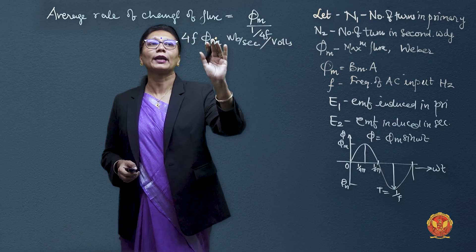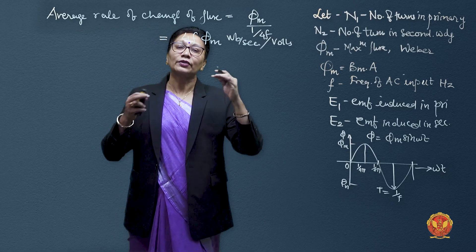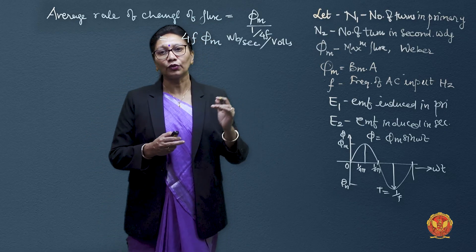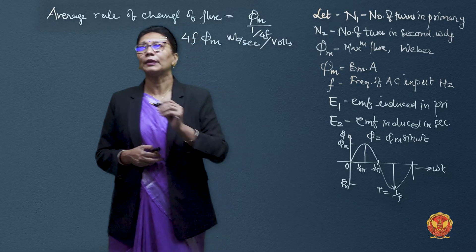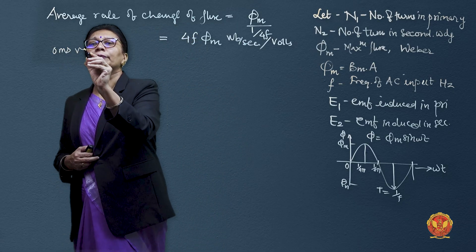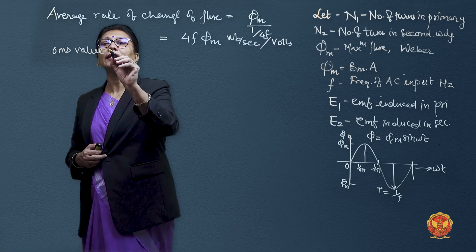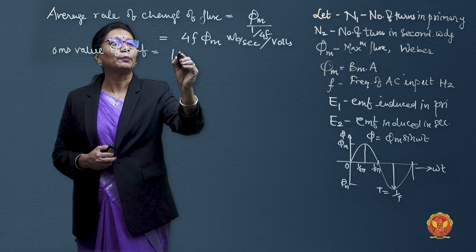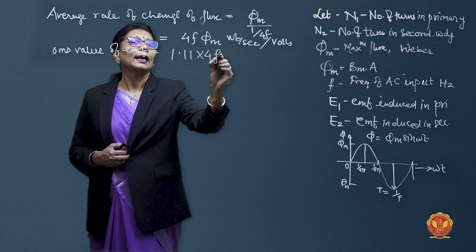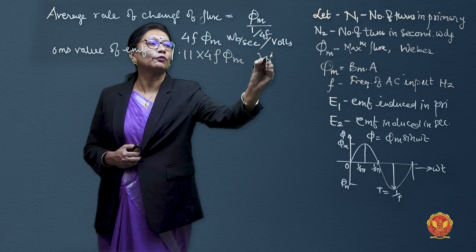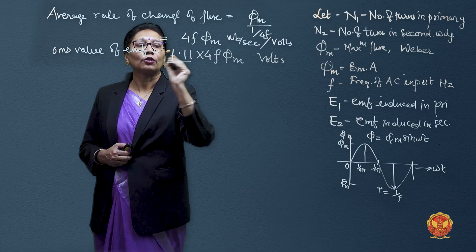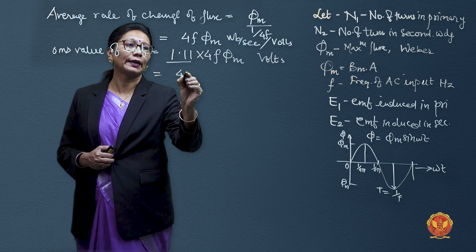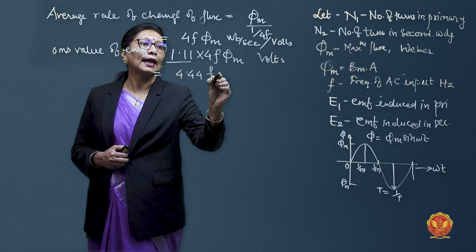The average EMF per turn is 4f × phi m. But because the flux is sinusoidally varying, the RMS value of induced EMF will also be sinusoidally varying. The RMS value of EMF is taken as 1.11 × 4 × f × phi m, where 1.11 is the form factor of a sinusoidal waveform. This is why our equation is modified to 4.44 × f × phi m.